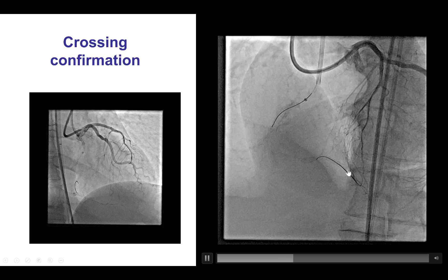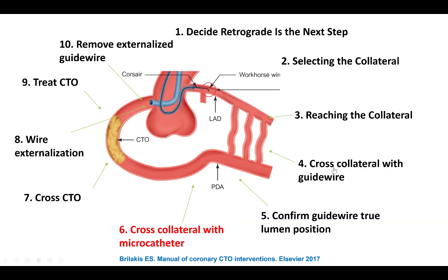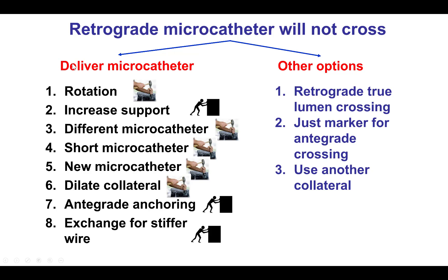We confirmed distal true-lumen position of the guide wire, but then we had the problem that we could not advance a microcatheter through that septal. There are different options to try to deliver the microcatheter. If all fail, another option is using the guide wire already in the retrograde true lumen to try to do true-lumen crossing. Unfortunately, that was not an option here because the SUO-03 is a very soft wire with little penetrating power.